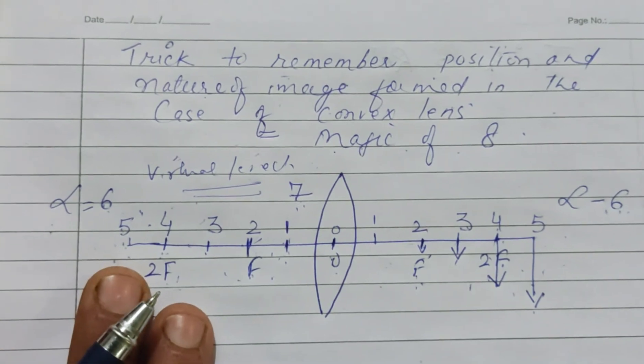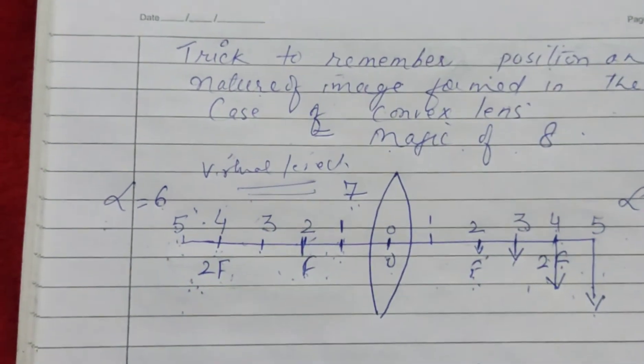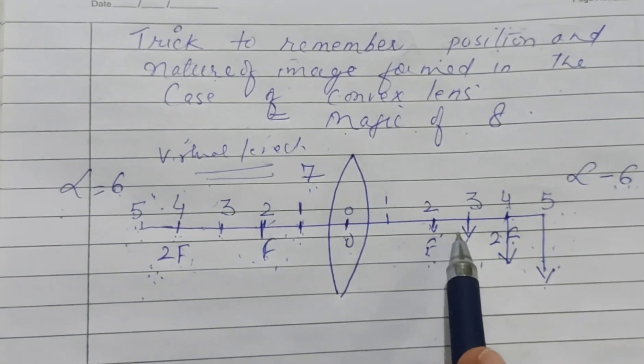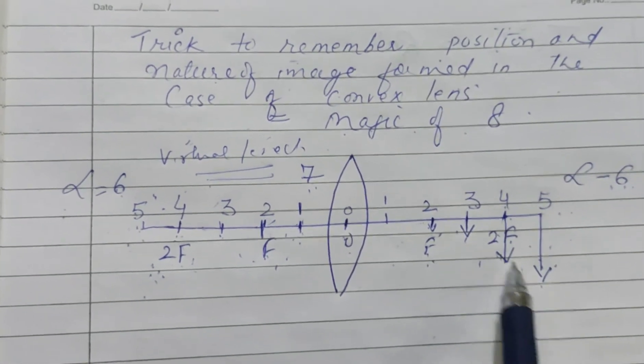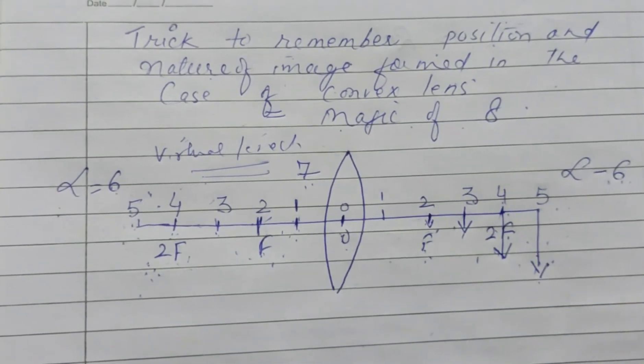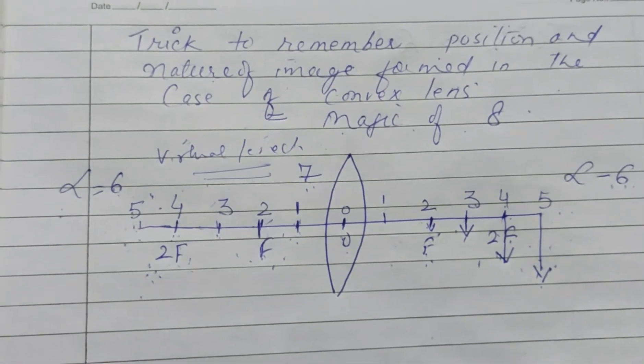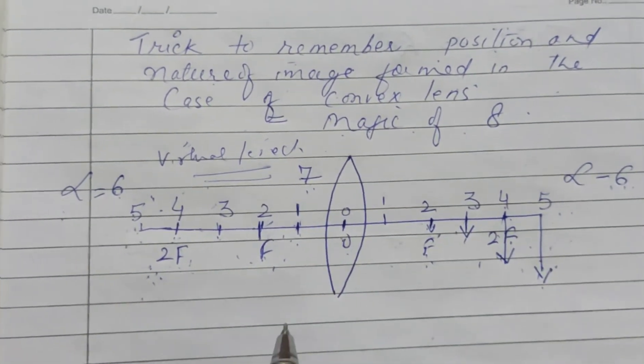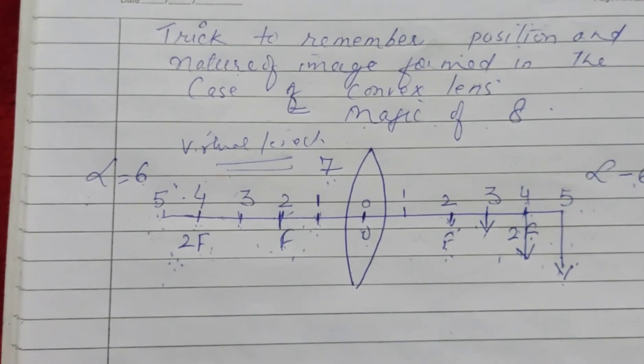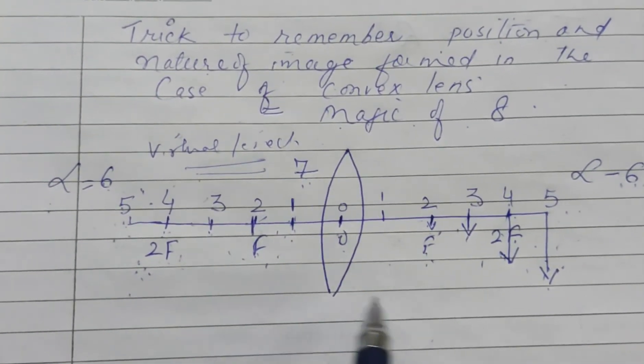Now see, this is very easy to remember. Starting from point-size image, it goes to equal size, then to magnified image, and it is highly magnified at infinity. Don't you think it is very easy to remember? You don't have to do anything in exams or tests.